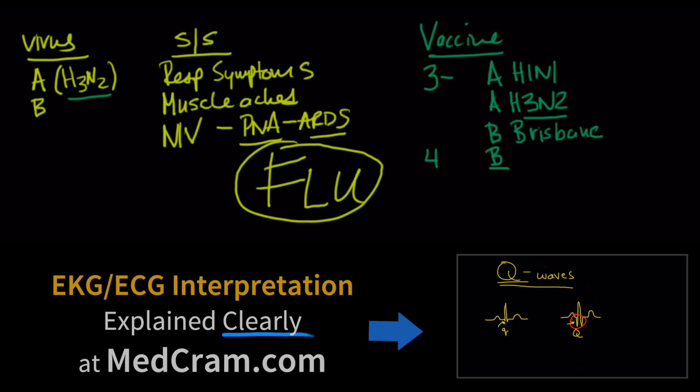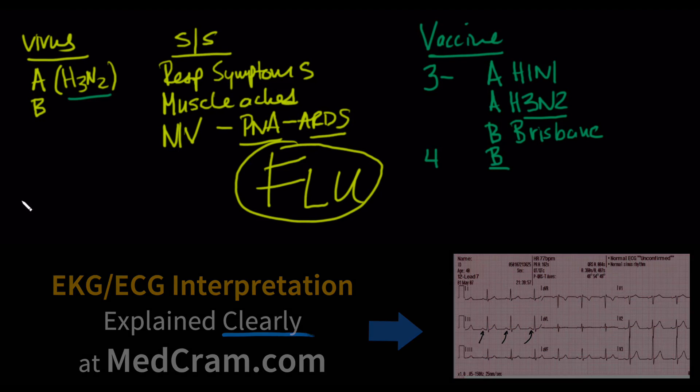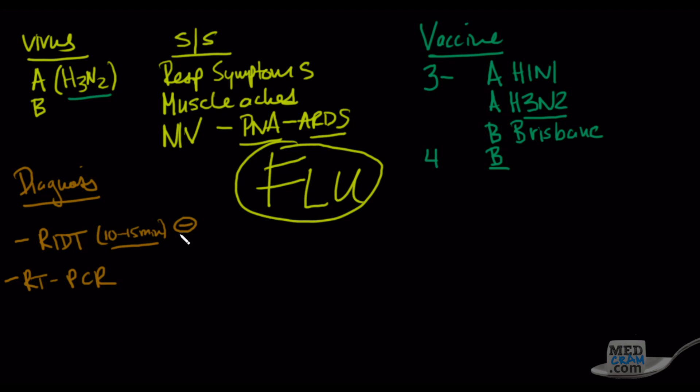How do you make the diagnosis? Let's say somebody comes in with these symptoms. The two major ways of doing it is using the RIDT, and the other one is using reverse transcriptase PCR. The RIDT can be done in about 10 to 15 minutes in the emergency room. The problem is, if this is negative, because the sensitivity is not very high, you can't rule it out.